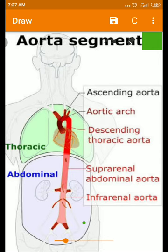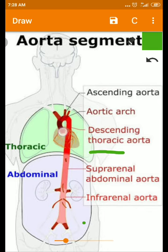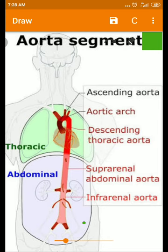First you should know about the descending thoracic aorta. The descending thoracic aorta is the continuation of the aorta. The aorta originates from the left ventricle and is divided into three segments: the ascending aorta, the arch of the aorta, and the descending aorta — which is called the thoracic aorta.